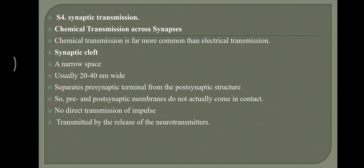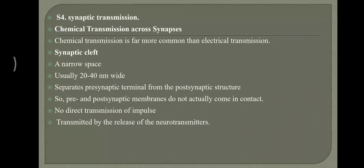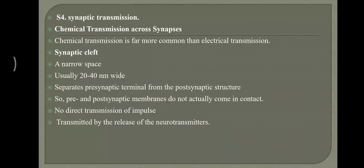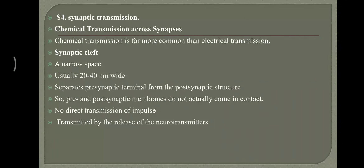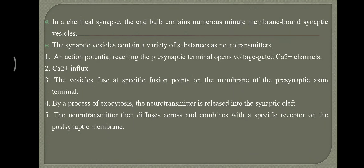Because there is no direct contact between the presynaptic and postsynaptic neurons, there is no direct transmission of impulse. A mediator is needed — called a neurotransmitter — for the transmission of impulse from one neuron to another. In a chemical synapse, the end bulb contains numerous minute membrane-bound synaptic vesicles. Those synaptic vesicles enclose a chemical substance called a neurotransmitter.